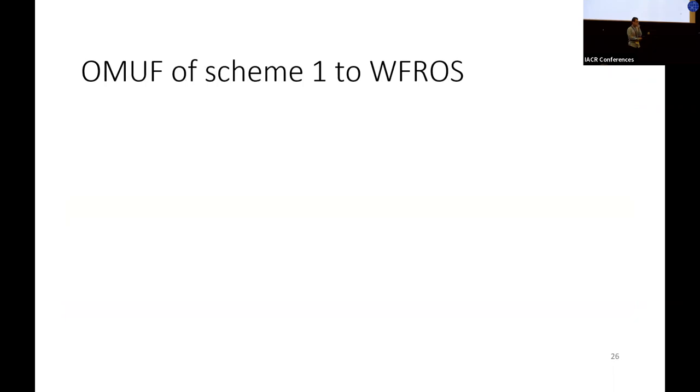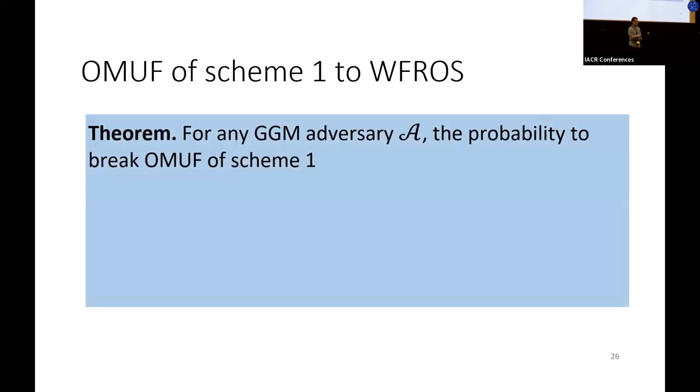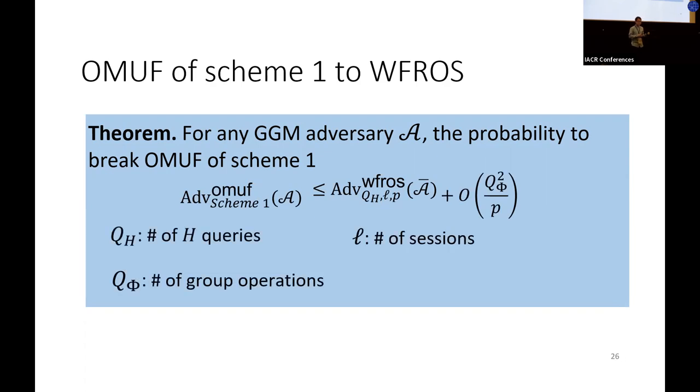Due to time limit, I will only show the main theorem we get for scheme 1. Formally, for any GGM adversary, the probability to break one-more unforgeability of scheme 1 is bounded by the probability of solving the corresponding WFROS problem plus a negligible term. Here Q_H represents the number of queries to the hash function H, L represents the number of signing sessions, and Q_GH represents the number of group operations performed by the adversary.